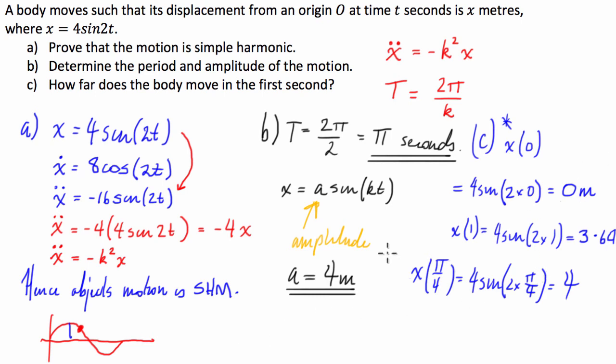So, what we can see is that in the first second our object starts at 0, it goes all the way to 4 and then it comes back a wee bit to 3.64. So, what we have to do is we just have to calculate the total distance that it travels.